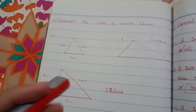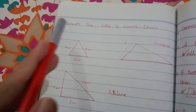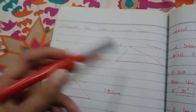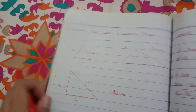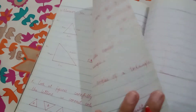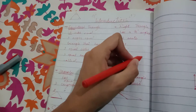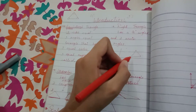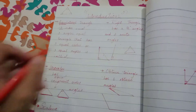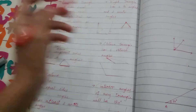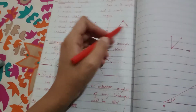Question number 4: measure the sides and name the triangles. I will draw the triangles on the board. If all sides are equal, for example this is 4cm, this is 4cm, and this is 4cm, then you can call it an equilateral triangle. In an isosceles triangle, there will be 2 sides equal. In a scalene triangle, there will be no sides equal.